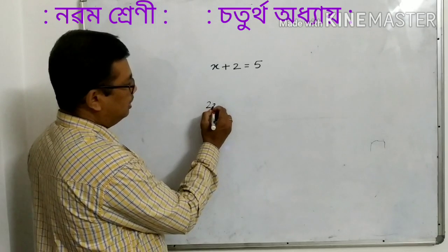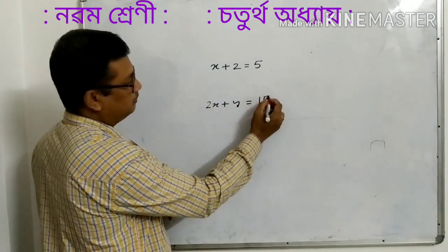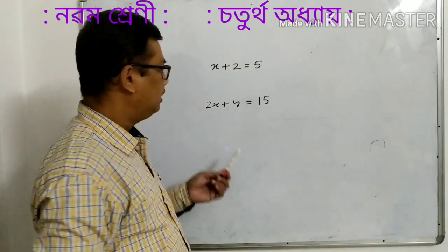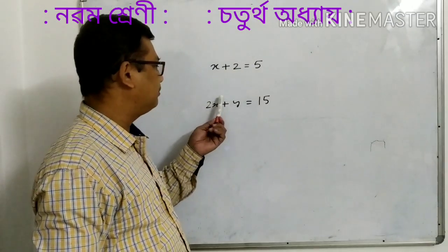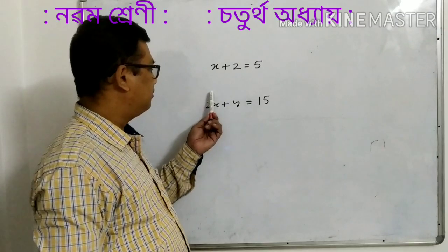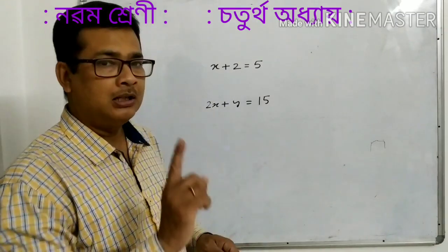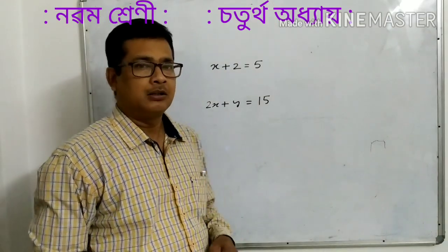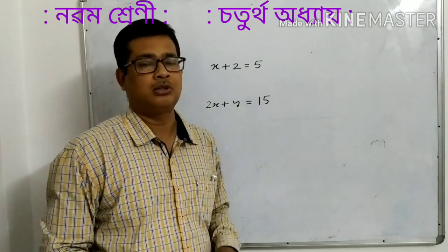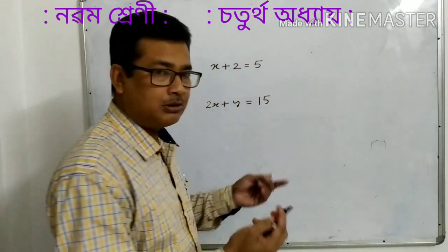Number one: 2x plus y is equal to 15. Now this is 2x plus y. Take 1 to 2x plus y — this is 1 to 1. We need to understand this in order to work through the factors.